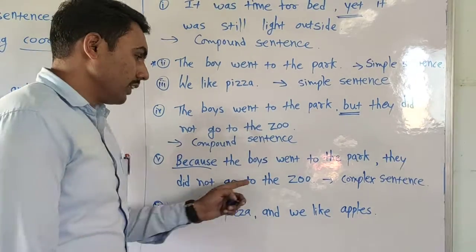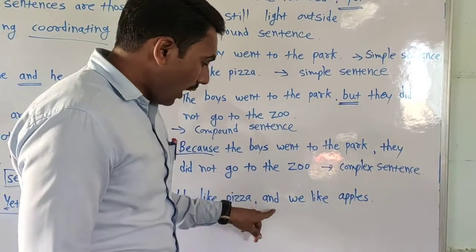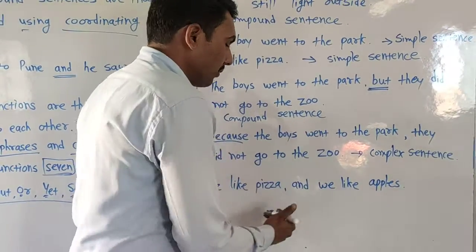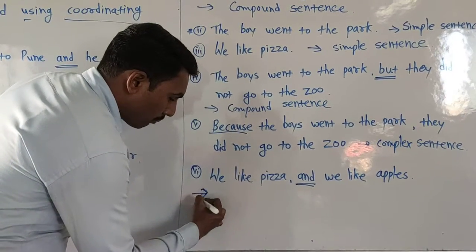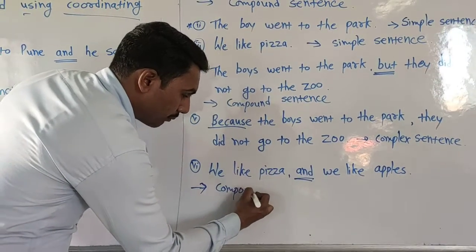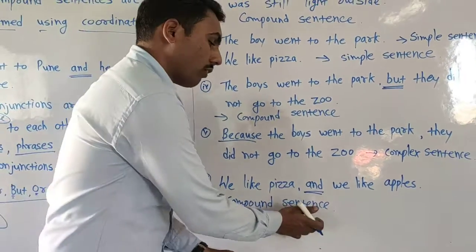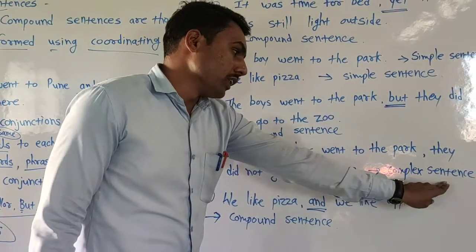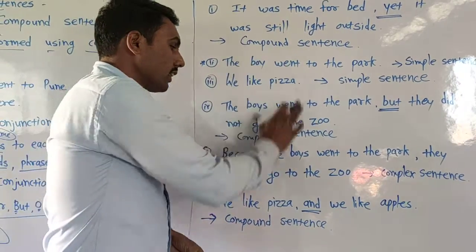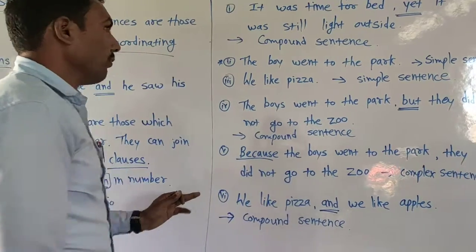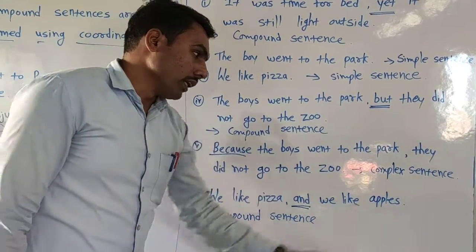The last sentence: 'We like pizza, and we like apples.' The two equal parts join with coordinating conjunction 'and', so this sentence belongs to compound sentence. Now to summarize: complex sentence means 'mishra vakya', compound sentence means 'sayyut vakya', and simple sentence means 'sadha vakya'. These are the three types of sentences, and we can easily identify them.